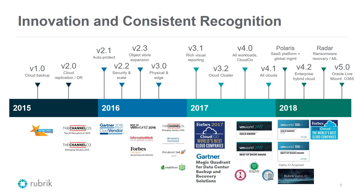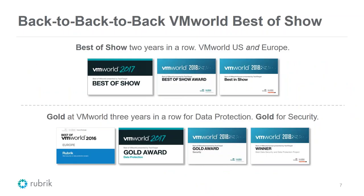We have constant recognition from our partner community as well as analysts and industry press. We received a Cool Vendor designation, and we hit the Magic Quadrant — the fastest company ever to do so, in just three years. We've won Best of VMworld two years in a row at VMworld US and VMworld Europe, the gold award for data protection three years in a row, and this year we also won the gold award for security — which is pretty interesting considering we're not a security company by design.